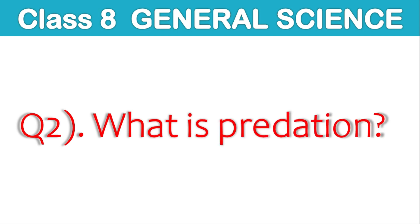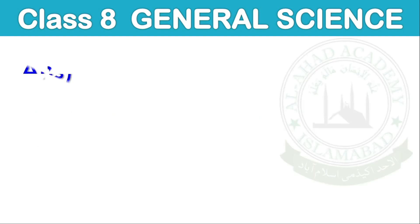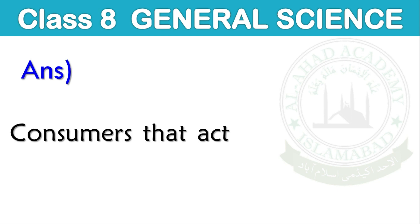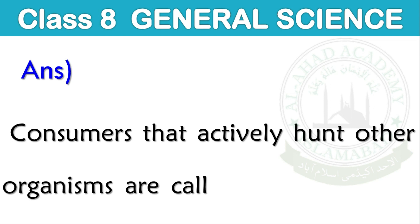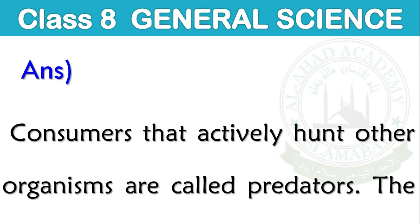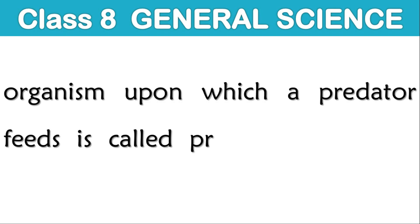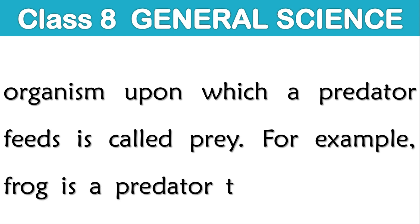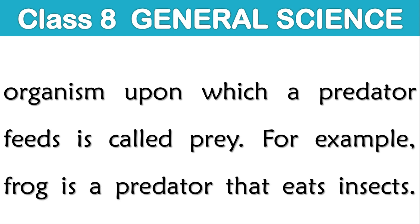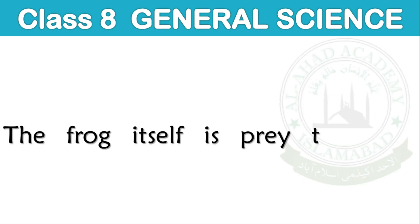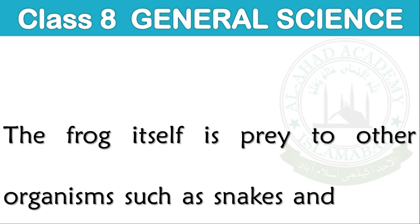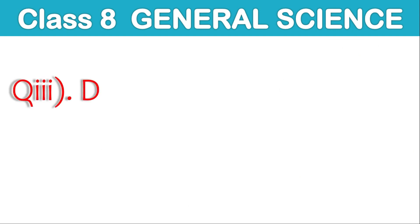Question number 2: What is predation? Answer: Consumers that actively hunt other organisms are called predators. The organism upon which a predator feeds is called prey. For example, a frog is a predator that eats insects. The frog itself is prey to other organisms such as snakes and storks.